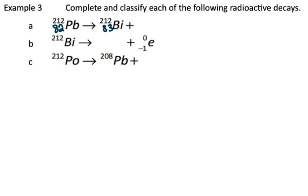And from this, we can determine what the other particle will be. In order for the masses to balance, this other particle must have a mass of 0. In order for the atomic numbers to balance, it must have an atomic number of negative 1. And any particle with a 0 minus 1 is an electron.